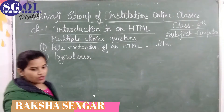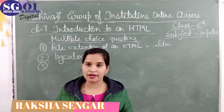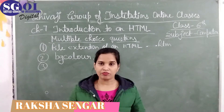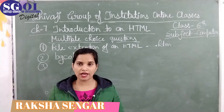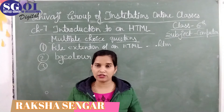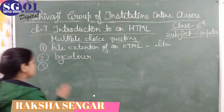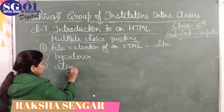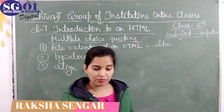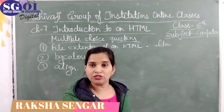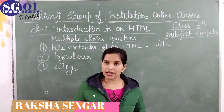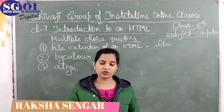Third question: which of these is not an attribute of the font tag? The font tag has three attributes: size, color, and face. But the fourth option, option A, is align. Align is not an attribute of the font tag. Align refers to alignments like center, right, left, and justify — but these are not font tag attributes. So the right answer is align.